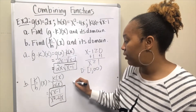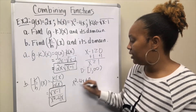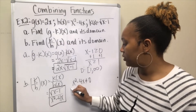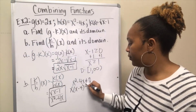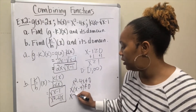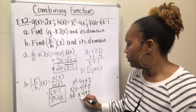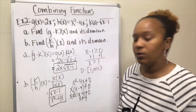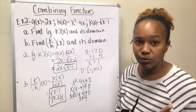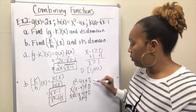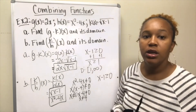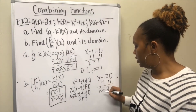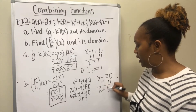For the fraction, the denominator x² - 4x cannot be zero. Setting x² - 4x ≠ 0, factor out an x to get x(x-4) ≠ 0. This gives x ≠ 0 and x ≠ 4. From the even root, x - 1 ≥ 0, so x ≥ 1. Adding one to both sides gives x ≥ 1.